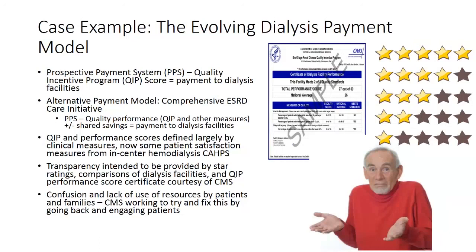If you don't meet a performance score on a set of about 16 measures to date, you can receive a penalty of up to 2% as a dialysis facility. There is now a pilot program that looks very much like an accountable care organization for dialysis care — it's called the Comprehensive ESRD Care Initiative, and it forms ESCOs, end-stage renal disease seamless care organizations. This takes both the prospective payment system, the quality incentive program, and several other quality measures to create a quality performance score. It also has the additive shared savings payments that dialysis facilities can receive if they come under a certain threshold of spending.